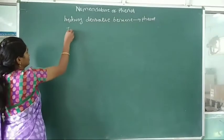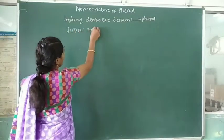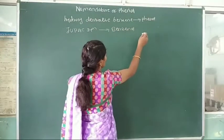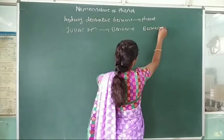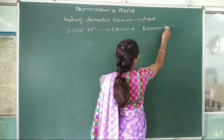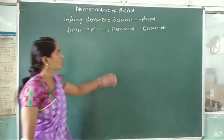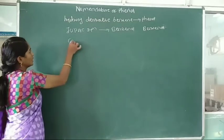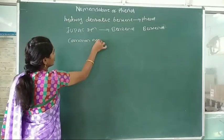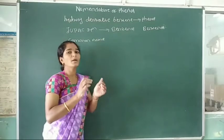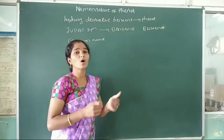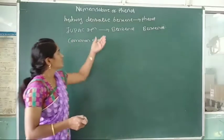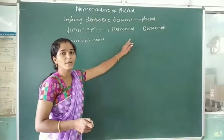In the IUPAC system, this phenol is called benzenol — the ending 'e' in benzene is replaced by 'ol'. So the IUPAC name is benzenol. The common name of this phenol is also accepted by the IUPAC group — phenol is accepted by IUPAC.